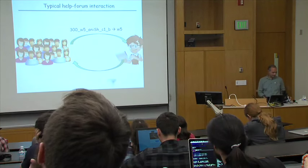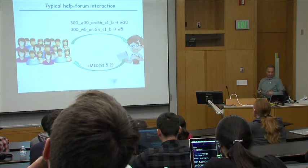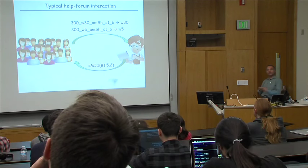Here is a typical interaction I noticed. An end user on a help forum will request an expert to give them a program that can convert an input string to an output string. The expert conjectures — in this case — that the user wants to extract two characters starting from the fifth one, and sends that program back. The user runs it on their spreadsheet, finds it doesn't work on some other input, and sends another example to the expert.